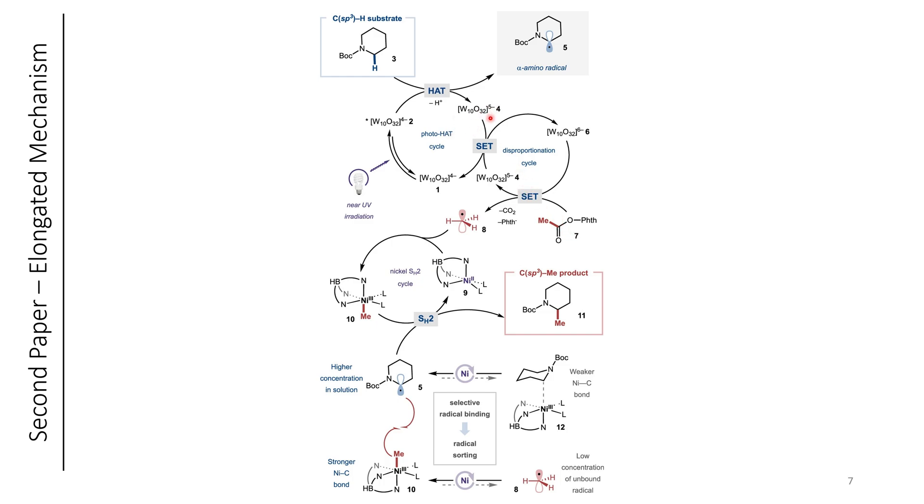The reduced photocatalyst is able to disproportionate, forming a further reduced decatungstate catalyst, which is then able to undergo a single electron transfer, reducing this redox-active ester, which is a derivative of acetic acid, to a methyl radical. This methyl radical is able to react with the nickel(II) catalyst, forming a nickel(III) methyl complex. This nickel(III) complex essentially will hold on to the methyl radical for a while, and it's essentially stabilizing the methyl radical.